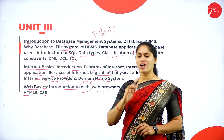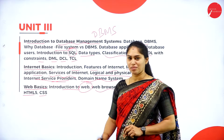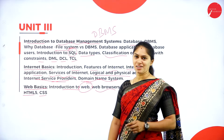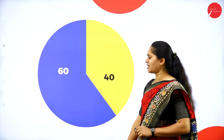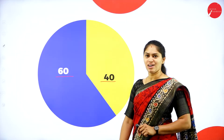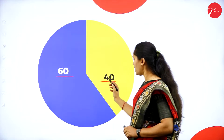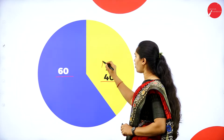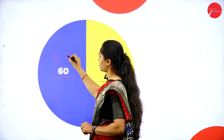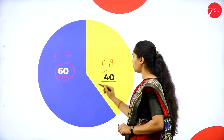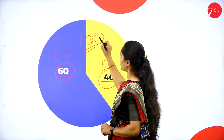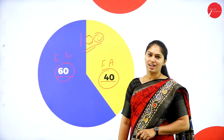In all three units, you will get 20 marks each in the main examination. The examination pattern is based on a 60-40 split: 60 marks for the external examination and 40 marks for internal assessment, totalling 100 marks.